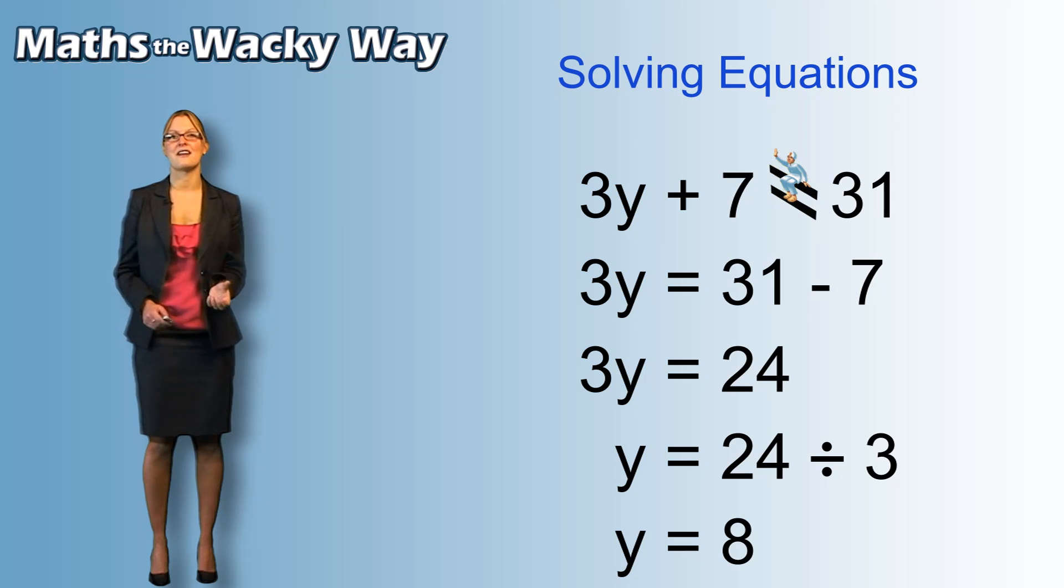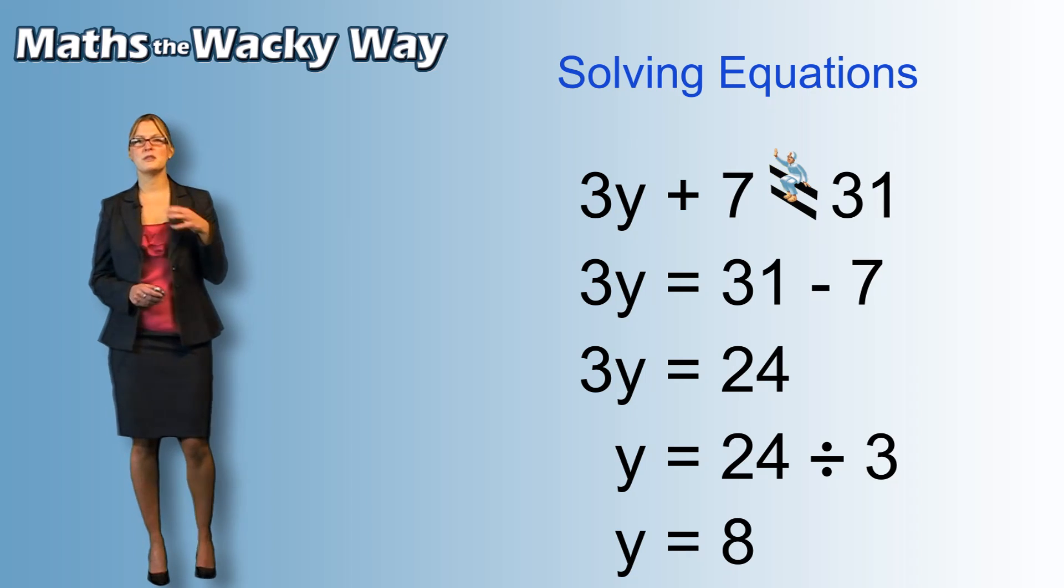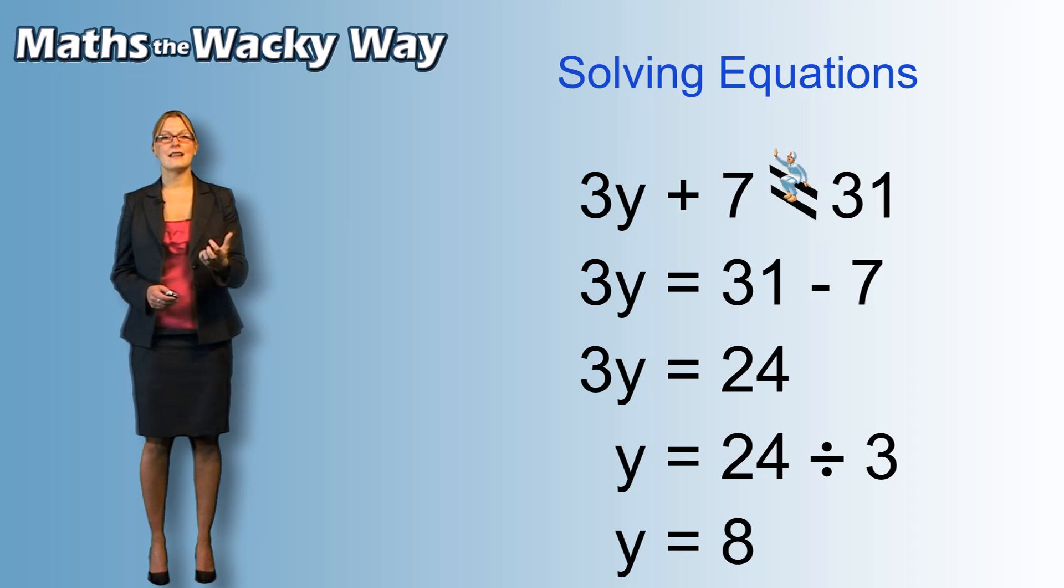So that's the method behind it. Now when we do this and we get our answer, we can always go back and double check. So if I go back in now and say, well, I thought y was 8, 3 times y, well, that's 3 times 8, that's 24, plus the 7, that gives me 31. So I know that it works.